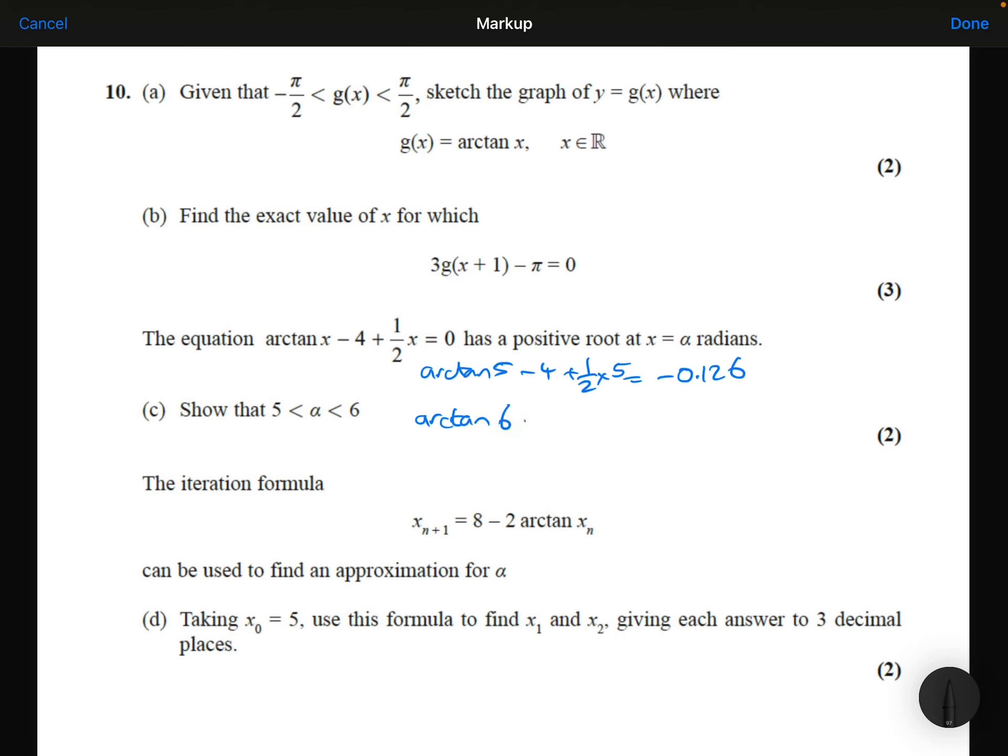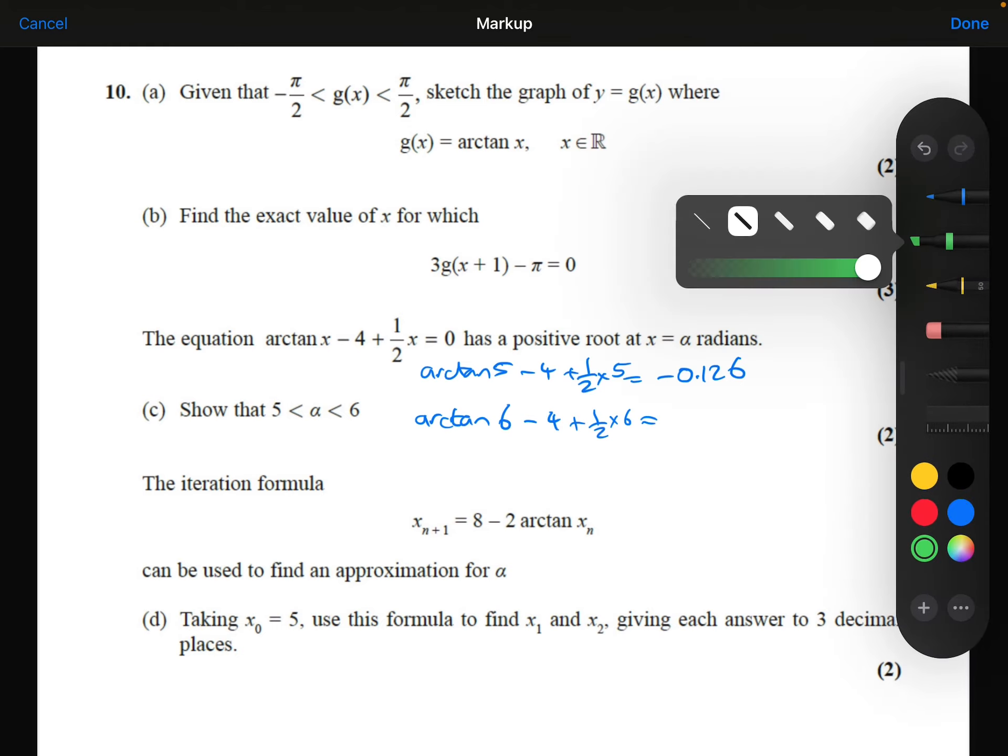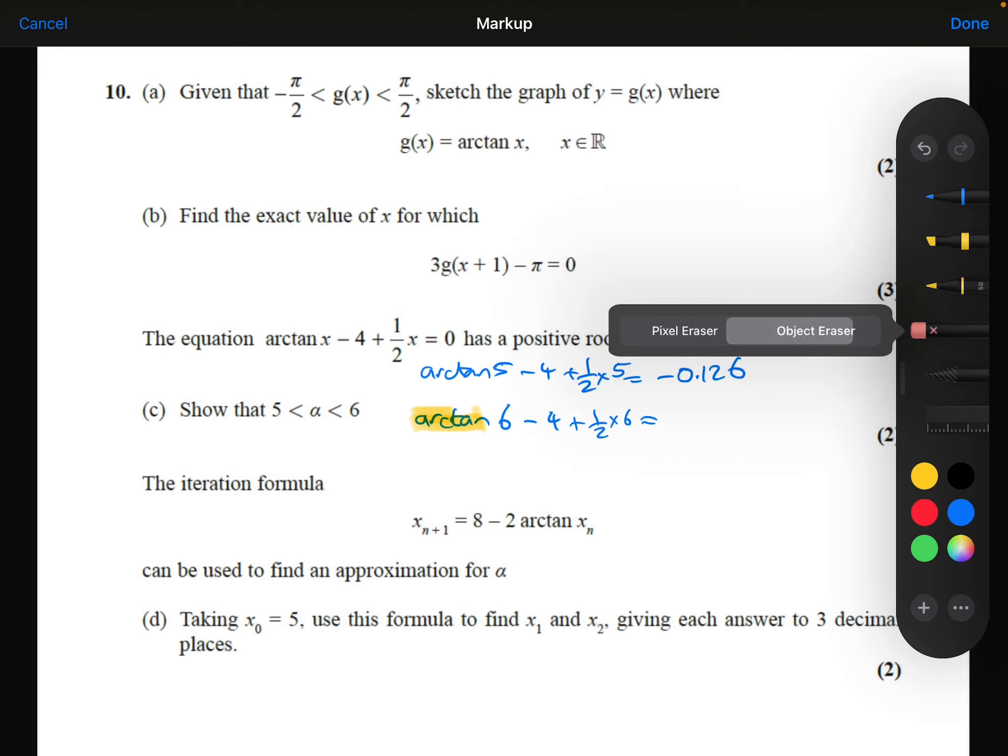If I now do the same thing with 6, arctan 6, so tan inverse of 6 minus 4 plus 1 half times 6. Just a quick reminder that when we do the arctan on your calculator, you're actually typing tan inverse. They're the same thing.